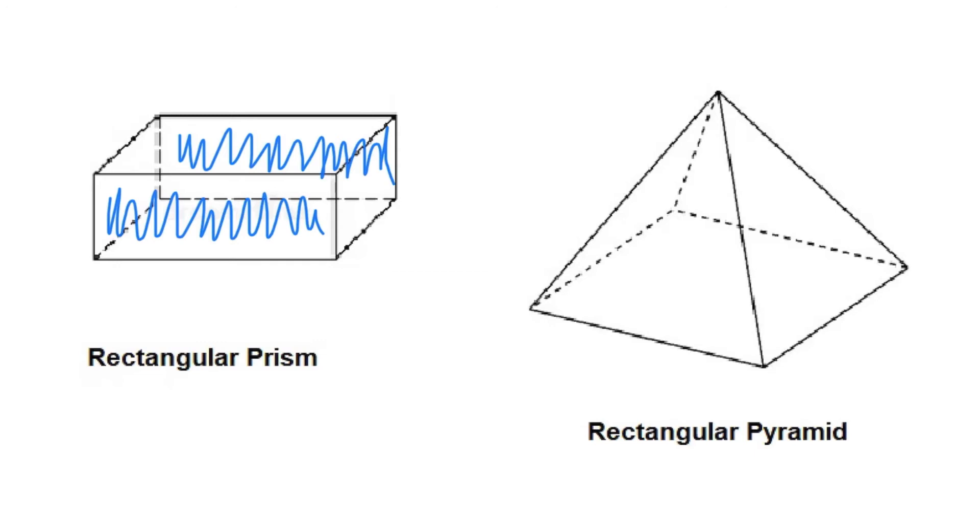Here the shape at the bottom is a rectangle. And each of the corners of that rectangle go to one vertex. So that is the definition of a pyramid. So this is a rectangular pyramid.